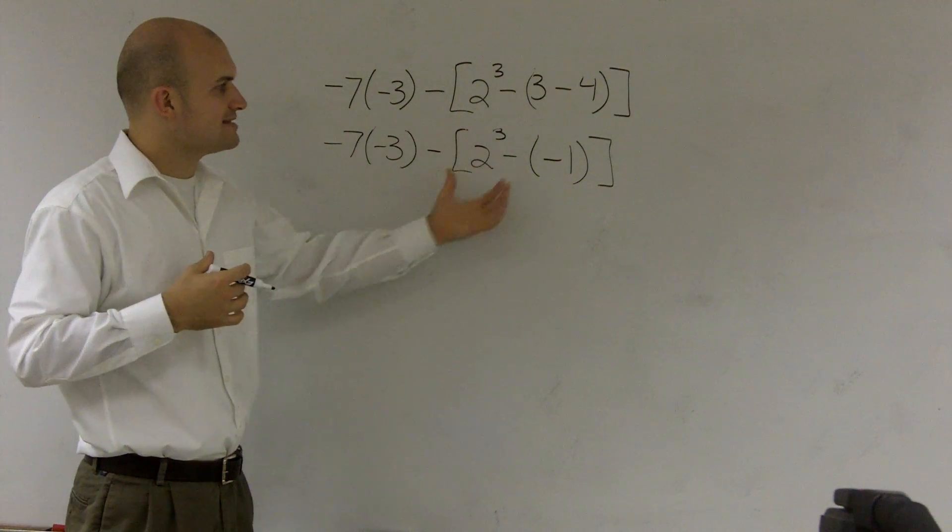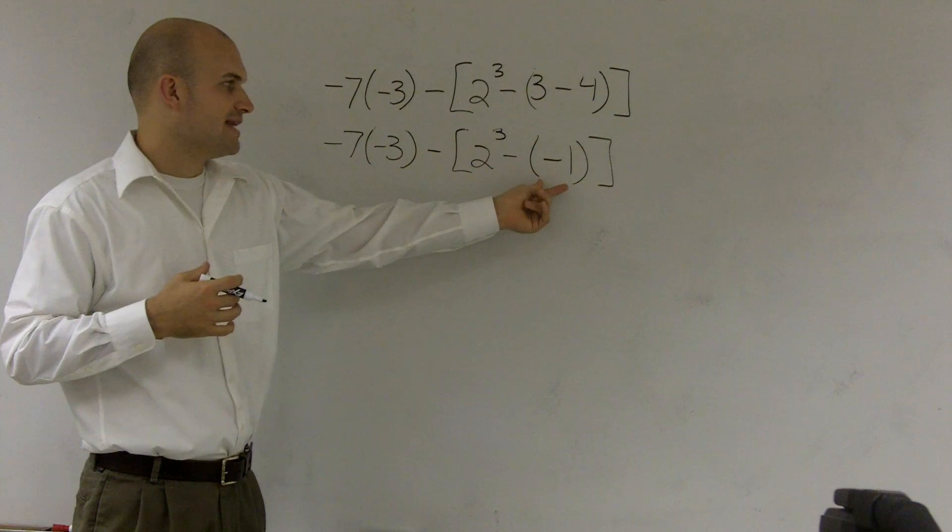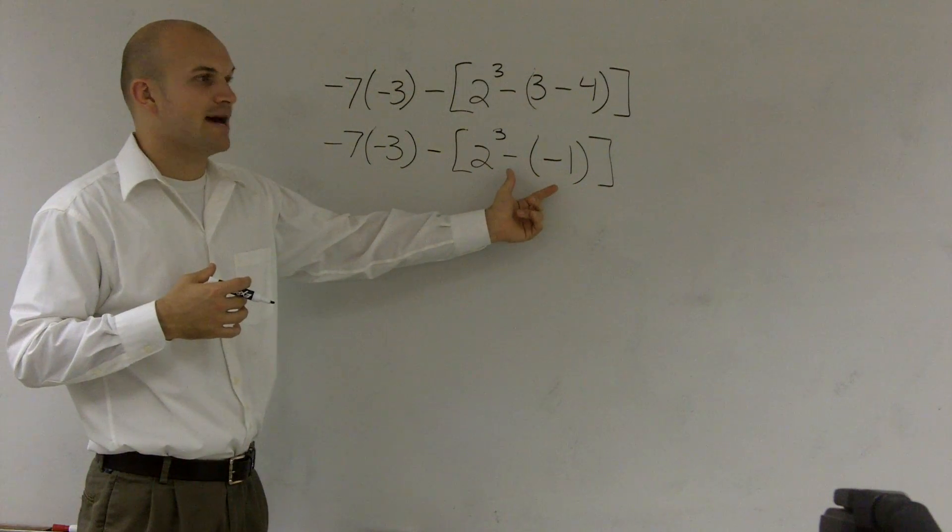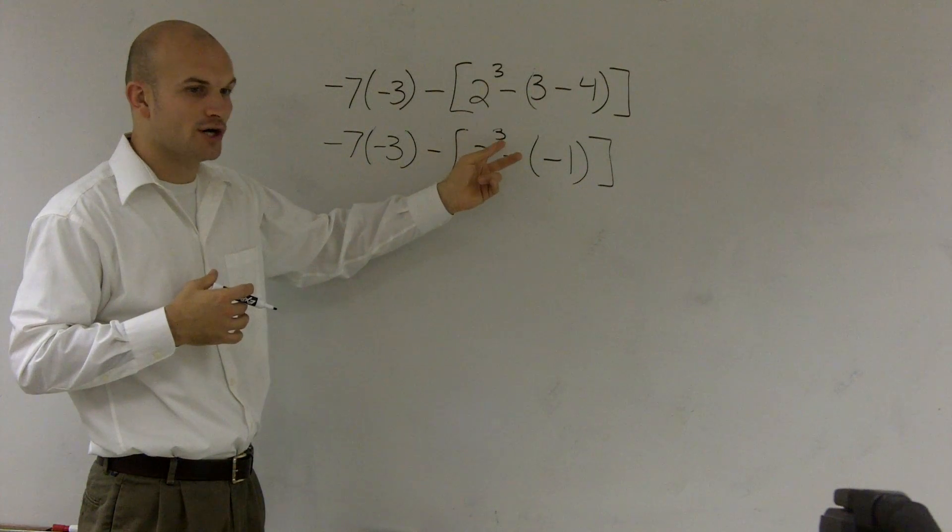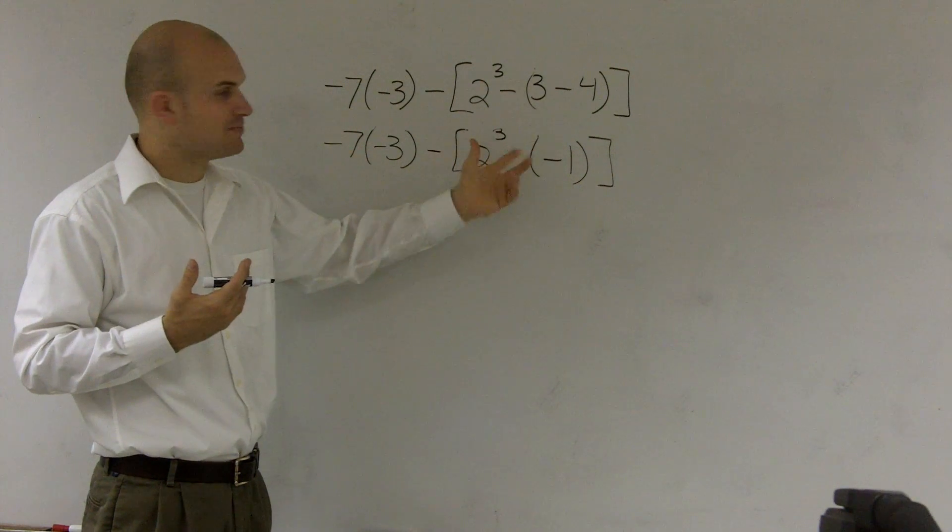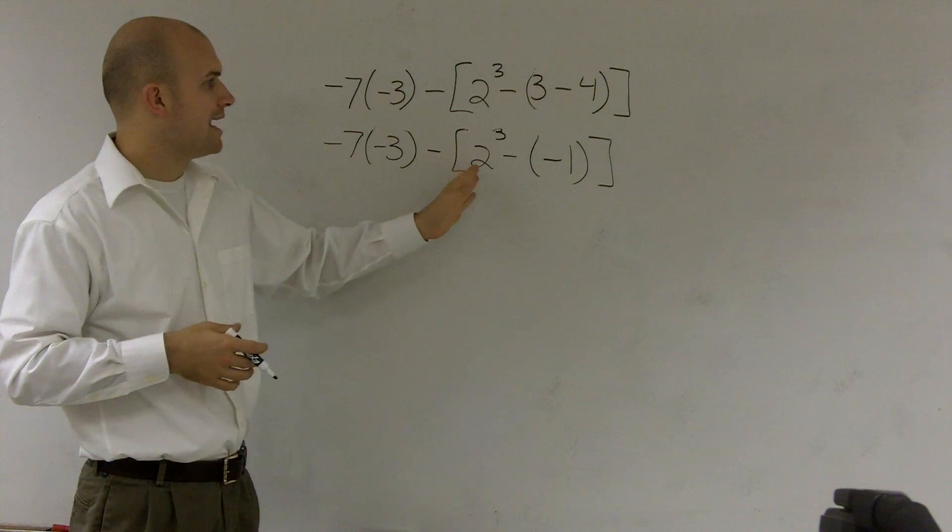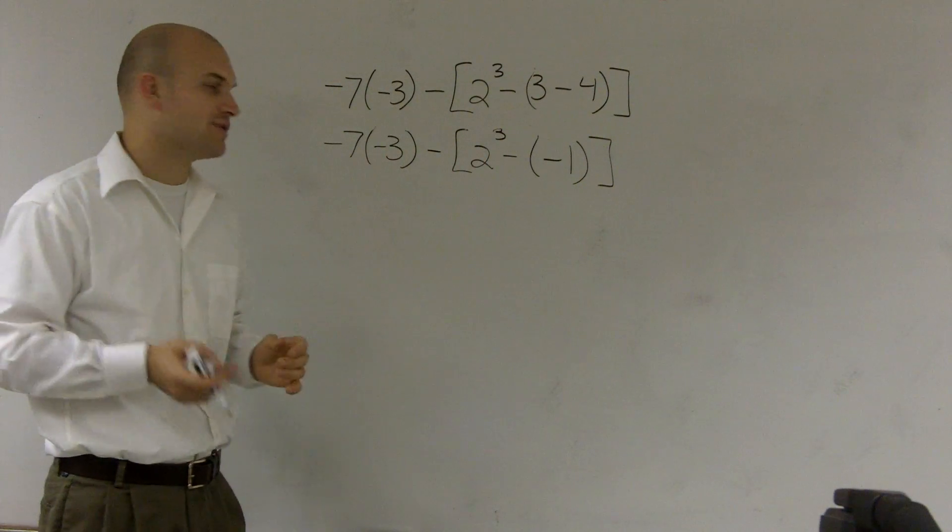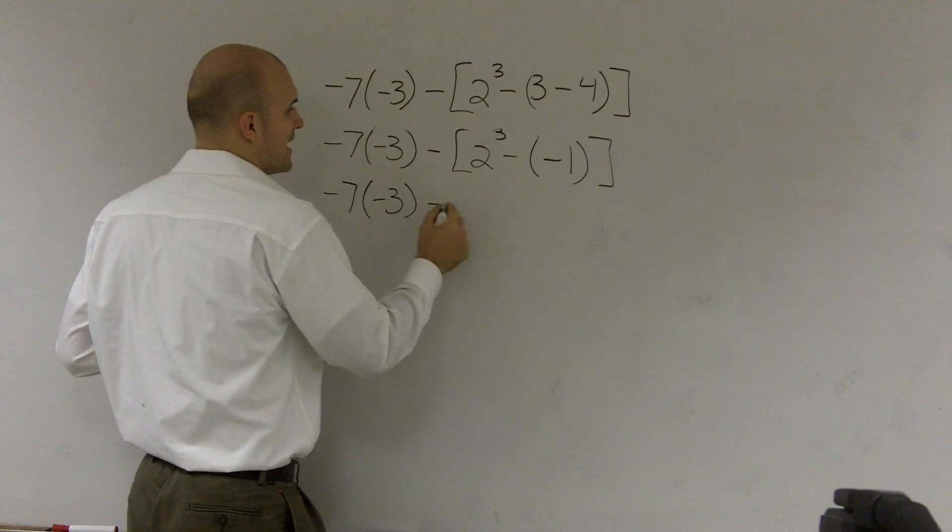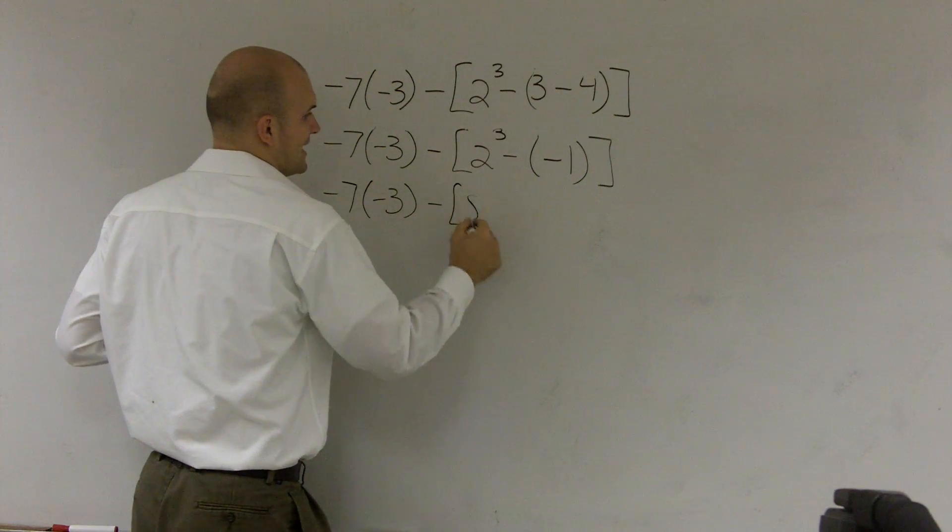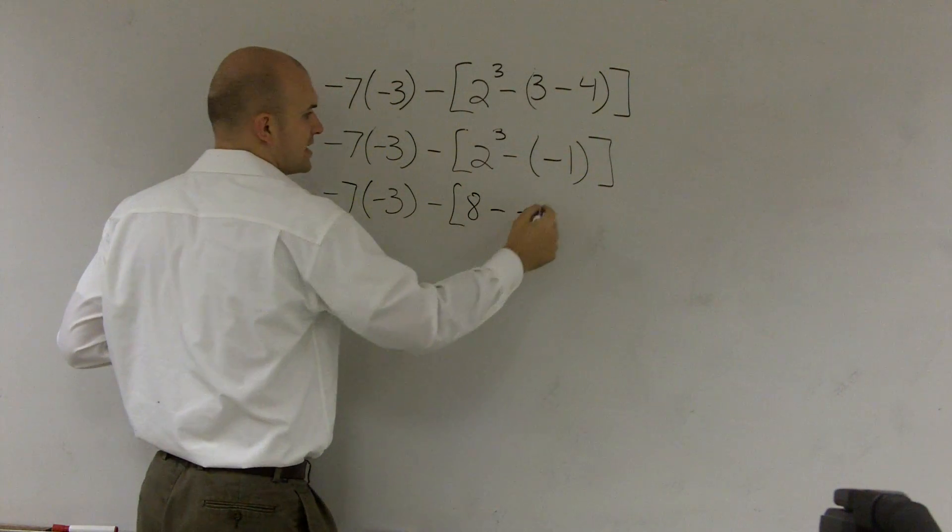The next one is, after you've done inside the parentheses, so I did that, then I've got to do is edit my exponents. So I see I have 2 raised to the third power, or the exponent is 3. So therefore, now I'm going to do 2 raised to the third power. So that's negative 7 times a negative 3 minus 8 minus a negative 1.